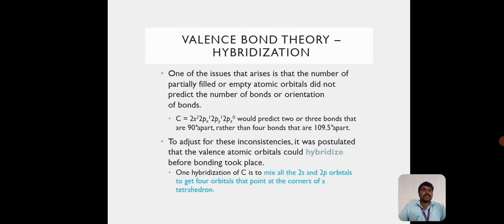Valence Bond Theory Hybridization: One of the issues that arises is that the number of partially filled or empty orbitals did not predict the number of bonds or orientation of bonds. For example, carbon's electronic configuration is 2s² 2px¹ 2py¹ 2pz⁰, which would predict 2 or 3 bonds that are 90 degrees apart rather than 4 bonds that are 109.5 degrees apart.